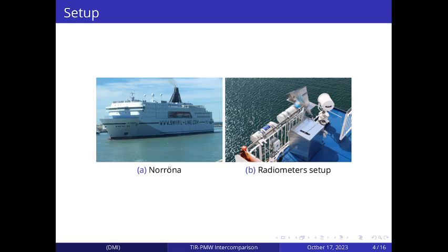On the left side, we see the Norona ferry used as a platform which travels between Denmark and Iceland on a weekly basis, except in winter, and in which the ISAR is regularly deployed.